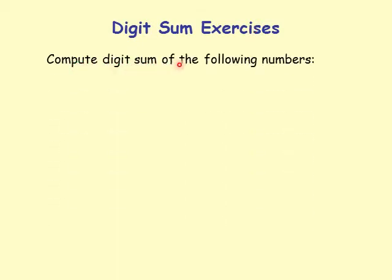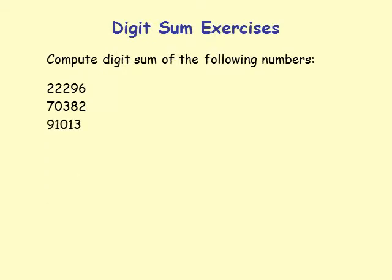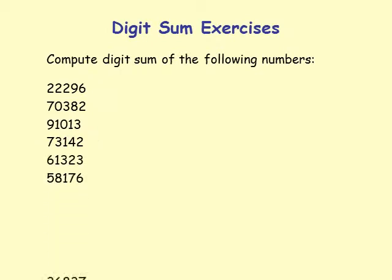Exercises: compute the digit sum of the following numbers — try 222967038291, 01373142, and some more.